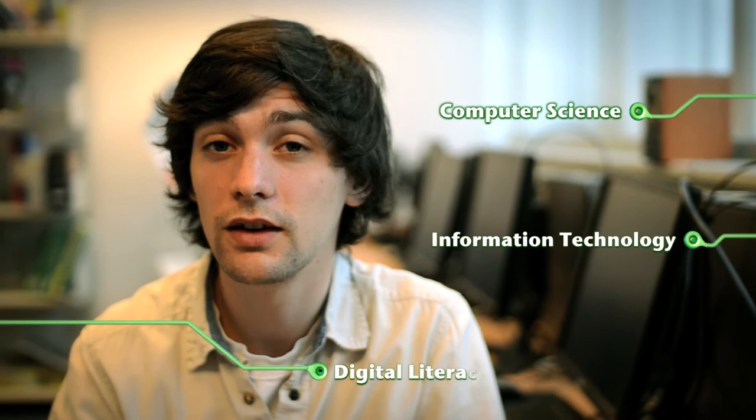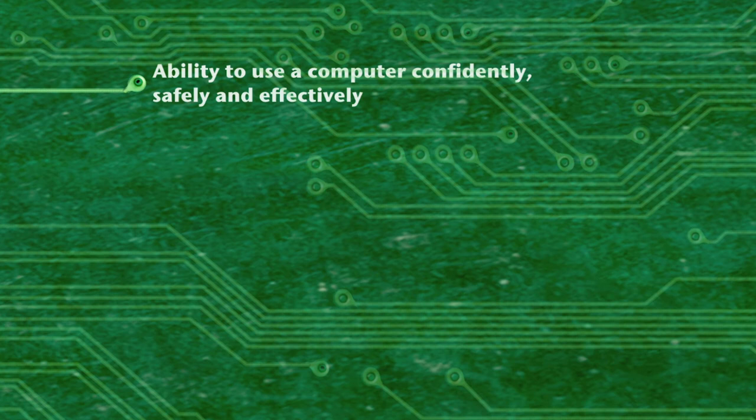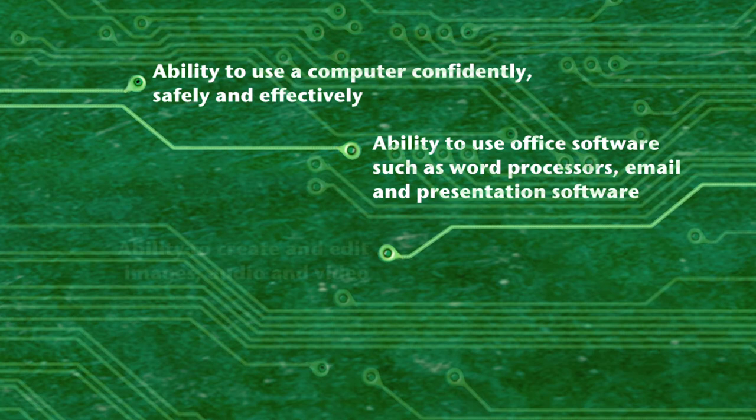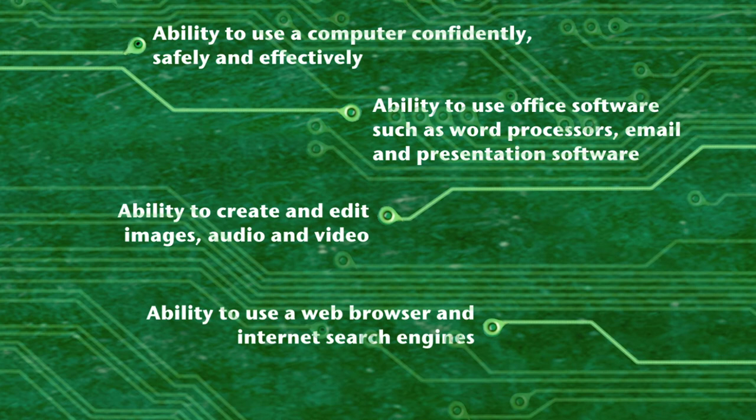The Royal Society published its report in January 2012 and concluded that the curriculum, called computing, should involve three key aspects: computer science — the understanding of computers and how they work; information technology — the productive and creative use of technology; and digital literacy. Digital literacy should be understood as the basic skill or ability to use a computer confidently, safely and effectively. This includes the ability to use office software such as word processors, email and presentation software, to create and edit images, audio and video, and to use a web browser and internet search engines. These are skills that teachers of other subjects should be able to assume their pupils have, as an analogue of being able to read and write.